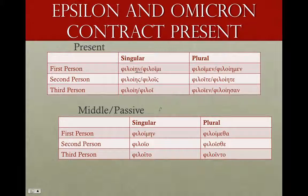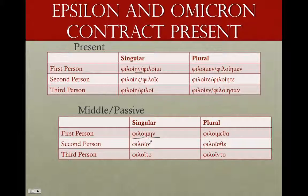The middle-passives for present contract verbs are perfectly regular — stem, theme vowel, iota, ending: φιλοίμην, φιλοῖο, φιλοῖτο, φιλοίμεθα, φιλοῖσθε, φιλοῖντο — with a circumflex because there is a contraction. The epsilon or omicron is being contracted out. The middle-passive is regular except for that contraction.